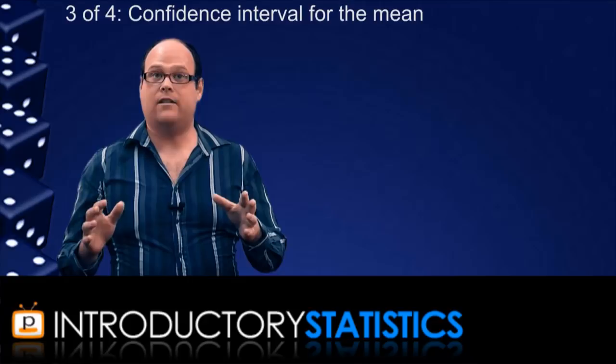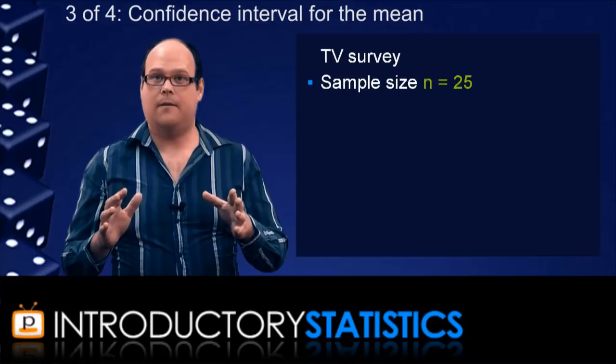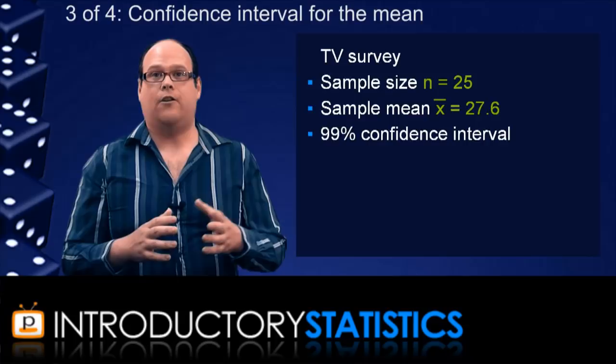Now once we've got our two critical values for our confidence interval, we can write what the interval is down. Remember the TV survey, we took a sample of 25 TV watching times, and we've got a sample mean of 27.6 hours. Let's say we want to construct a 99% confidence interval, giving us the two critical values, plus or minus 2.576.